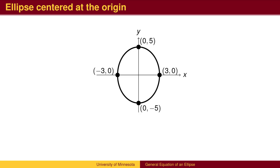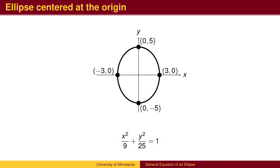Here is an example. This ellipse is a standard circle centered at the origin that has been stretched 3 times wider and 5 times taller. You may wish to pause the video to write out the equation. The horizontal stretch is by a factor of 3, so the number under the x-squared is 3-squared, which is 9, and the number under the y-squared is 5-squared, which is 25, since the ellipse is stretched by a factor of 5 vertically.